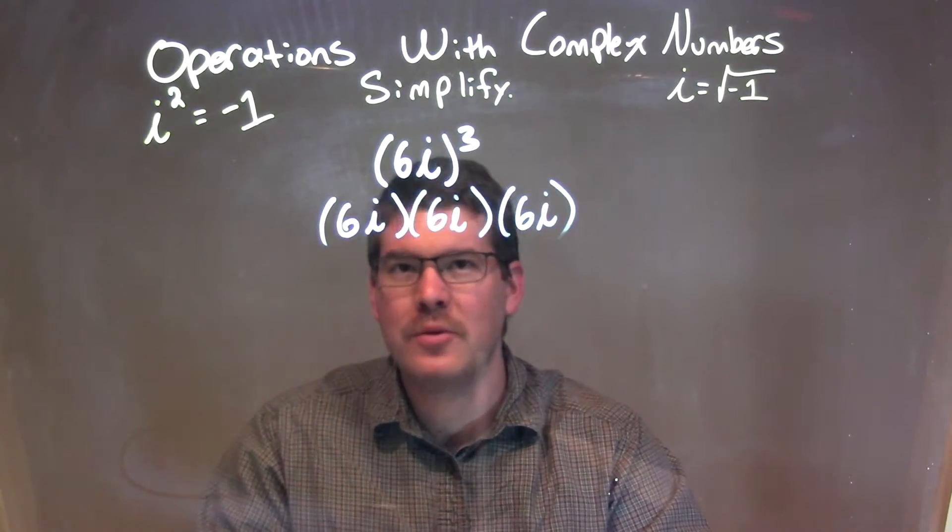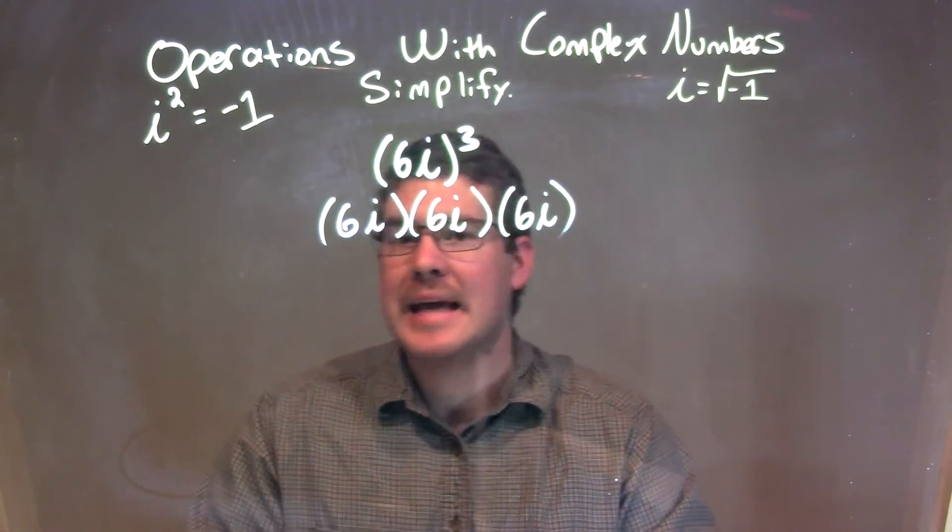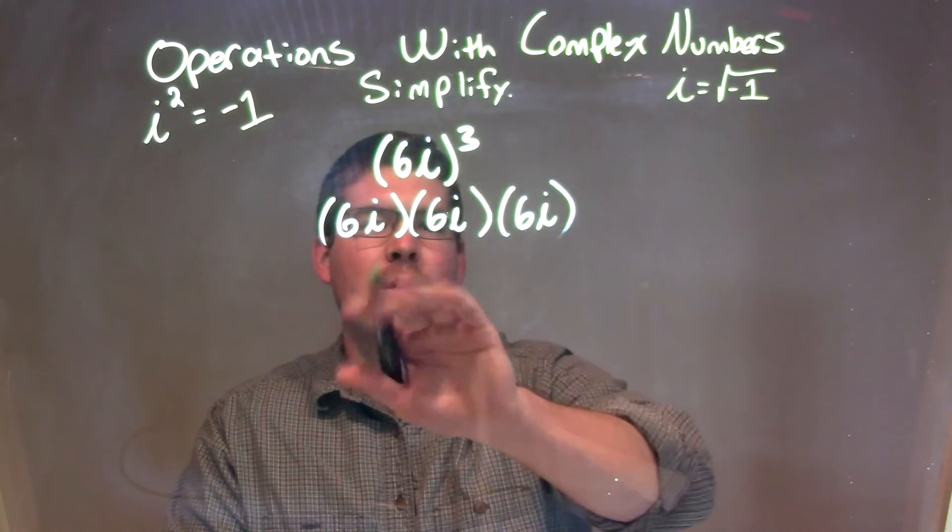So, some people, once you get comfortable, you can say, okay, it's 6 to the third times i to the third, and go from there, which we can. And let's do that, actually. So, we're going to see how it's broken down, but let's just multiply it out.